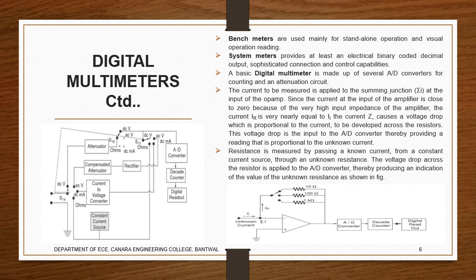Now we'll discuss some of the meters. Bench meters are mainly for standalone operations and independent operation readings. There's a resistance part, so we provide current to pass through, measure voltage, and find out the resistance. System meters provide at least electrical binary coded decimal output and sophisticated connection and control capabilities. Usually they're used as an interface part to a computer. A digital multimeter is made up of several analog to digital converters for counting and attenuation circuits. Commutations are used as I told earlier.